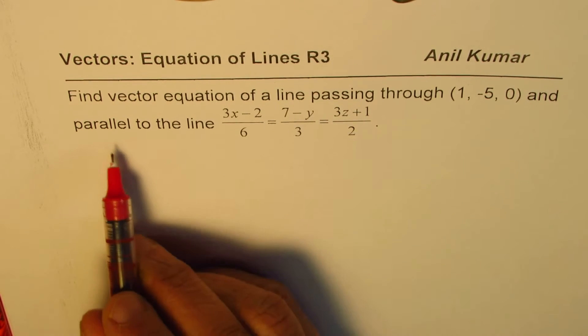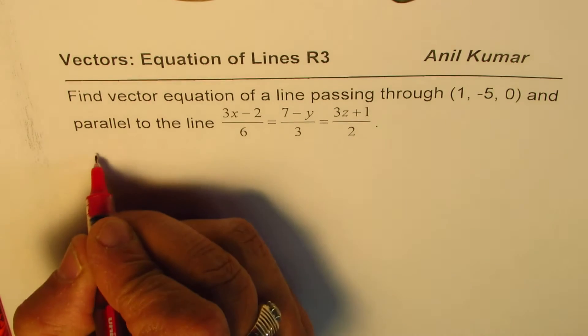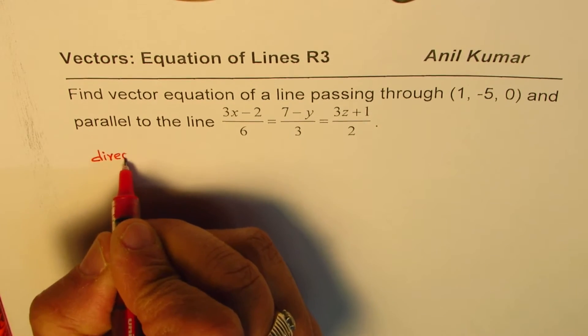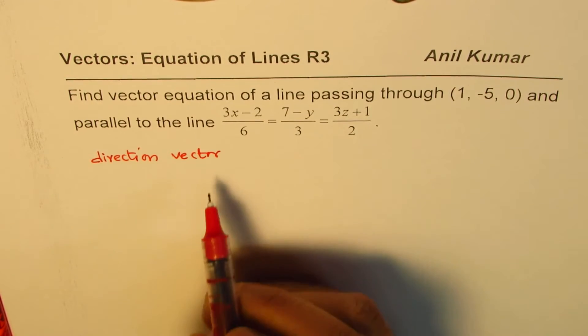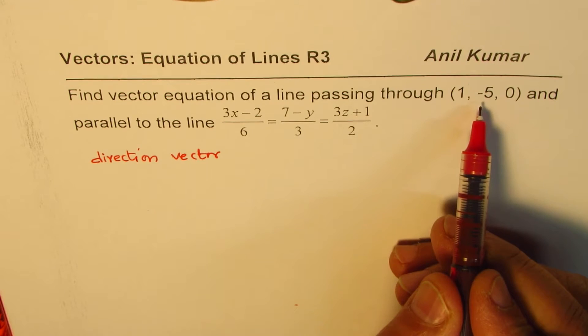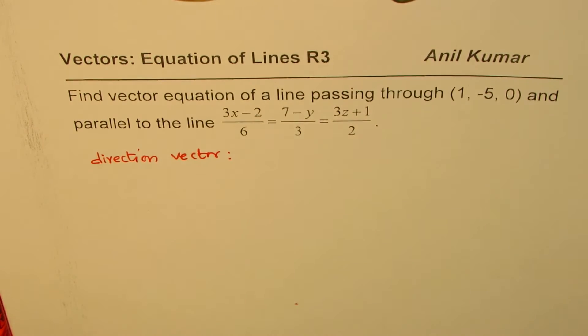Now, to find a line parallel to the given line, we need to find the direction vector. So the steps are to find the direction vector. Once we find the direction vector, it will be a combination of the position vector and parameter times direction vector. So that's the first step.